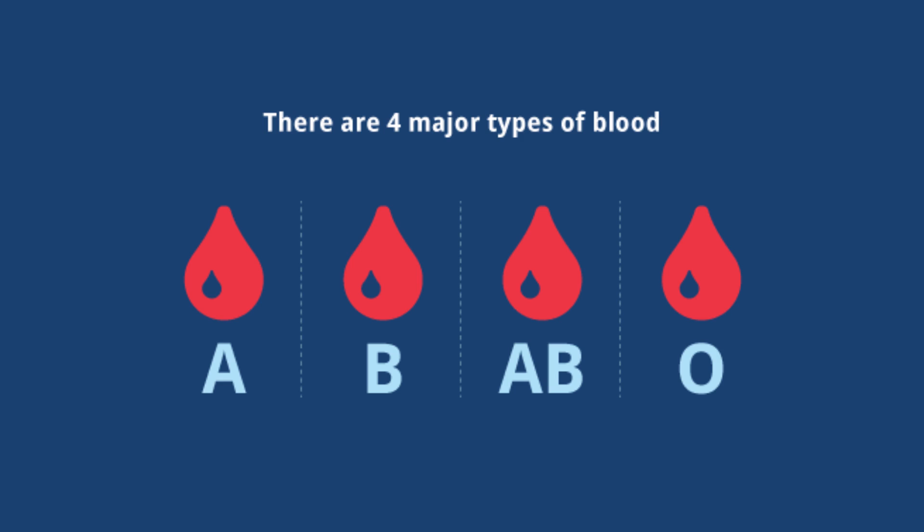People with blood type A should avoid meat because vegetables are more suitable for them. People with blood type B need to avoid chicken meat and consume red meat more, whereas group AB will benefit from seafood and lean meat.